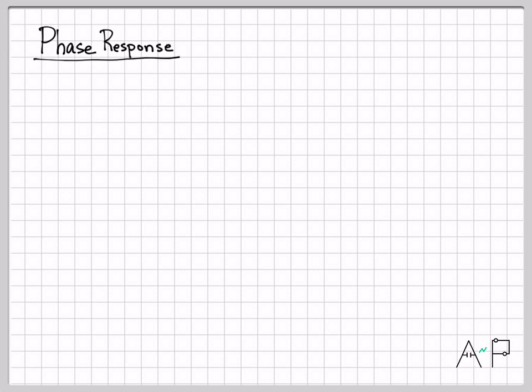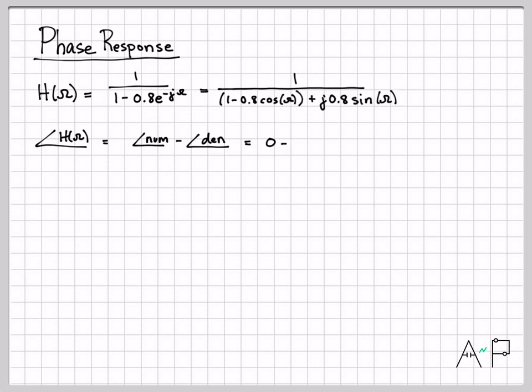Let's go ahead and do a similar thing for the phase response. There again was how we started on the first slide of this video. And we want to compute the angle of that quantity. In general, anytime you're computing the angle of a ratio, it's the angle of the numerator minus the angle of the denominator. So that's what we're going to use right here.